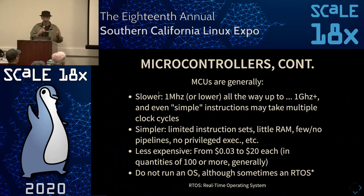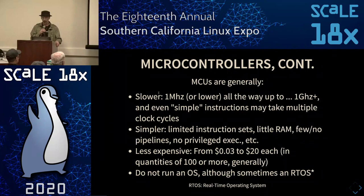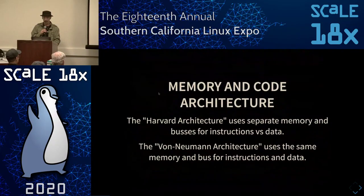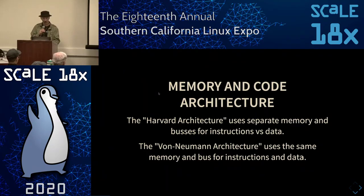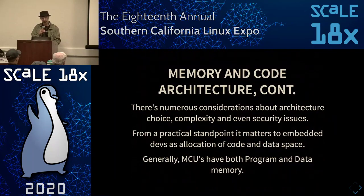Microcontrollers are generally slower and simpler in some ways. They can be much less expensive — anywhere from three cents up to about $20. Generally they don't run an OS, although they can run a real-time operating system. There are different types of memory in them — Harvard and Von Neumann architectures — which sometimes comes up when programming them. That becomes important when you're working with microcontrollers.